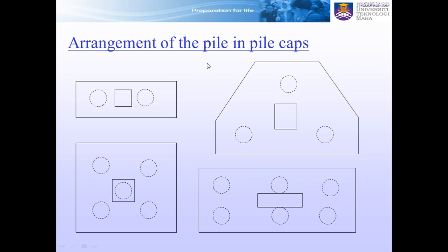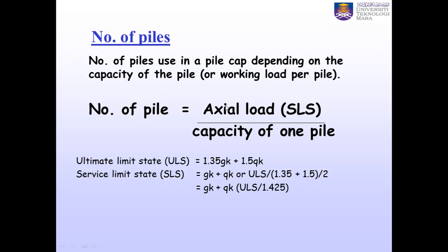In terms of arrangement of piles in pile caps, we can have two, three, five, or six number of piles. To calculate the number of piles for a pile cap, we use the axial load in service limit state divided by the capacity of one pile. The capacity of one pile is calculated from a soil investigation report, and is also called the working load per pile.